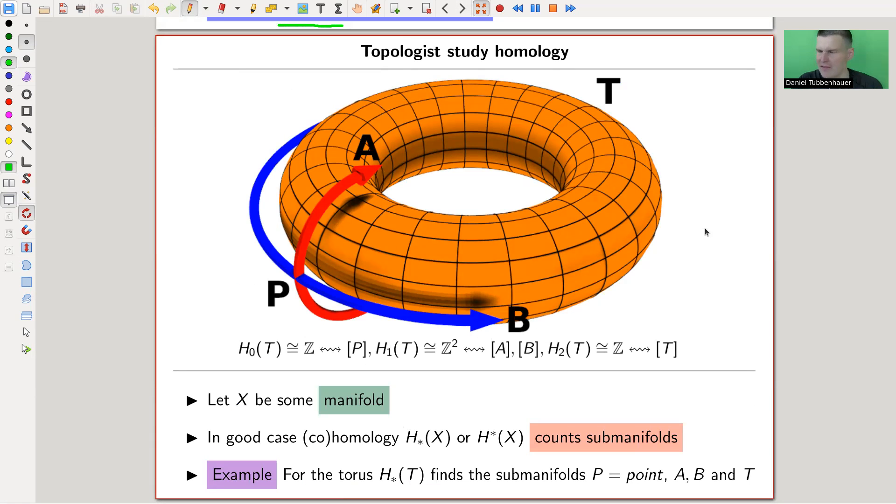And what topology does, topologists do. So classical, as I said, they study something like homology. Homology is one of the key inventions of the last century, in mathematics at least. So they study homology. You would throw your homology on your space, and you would try to compute it.